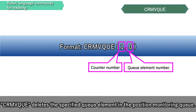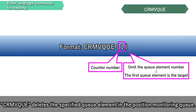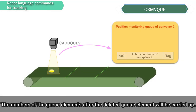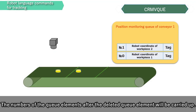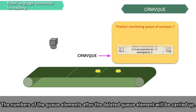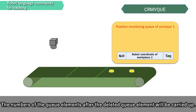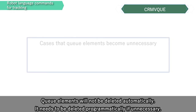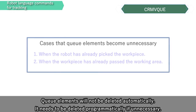C-remove queue deletes the specified queue element in the position monitor in queue. The numbers of queue elements after the deleted queue element will be carried up. Queue elements will not be deleted automatically; they need to be deleted programmatically if unnecessary.